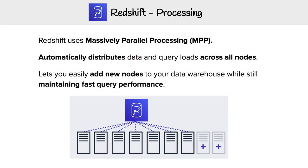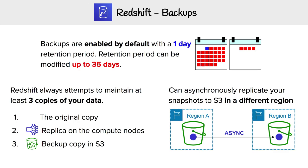Redshift uses massively parallel processing — MPP — which automatically distributes data and query loads across all nodes, letting you easily add new nodes to your data warehouse while maintaining fast query performance. Backups are enabled by default with a one-day retention period, and retention periods can be modified up to 35 days. Redshift always attempts to maintain at least three copies of your data: the original, a replica on the compute nodes, and a backup copy in S3. Redshift can also asynchronously replicate snapshots to S3 in a different region.